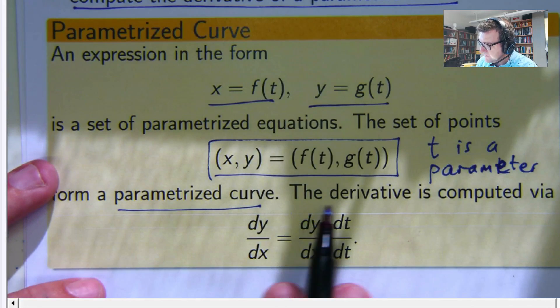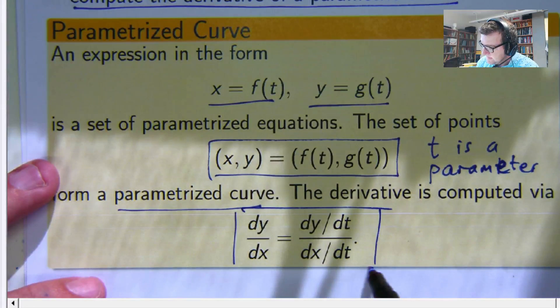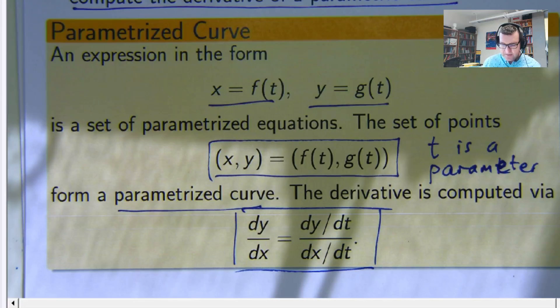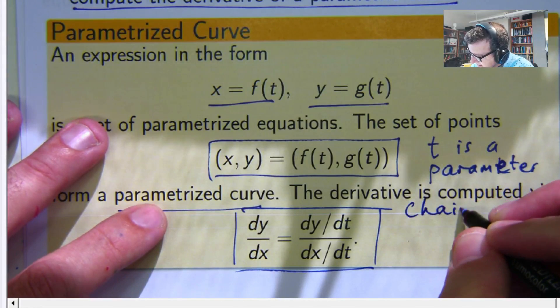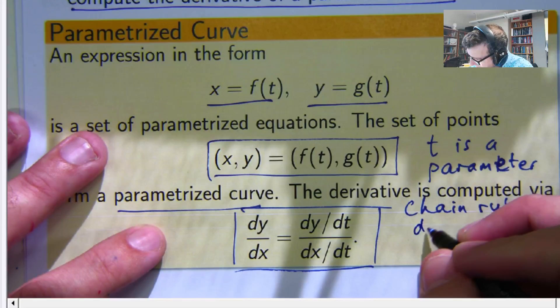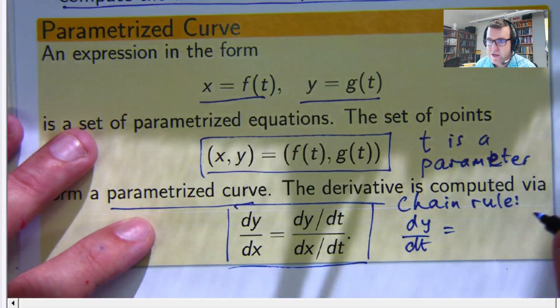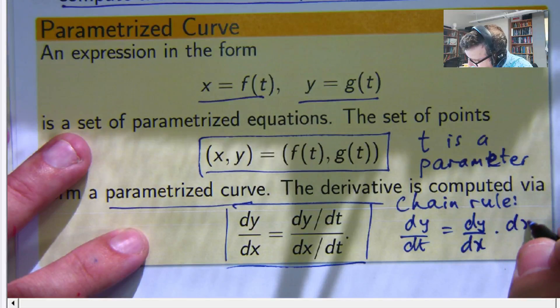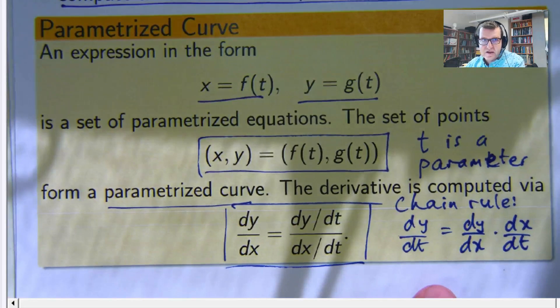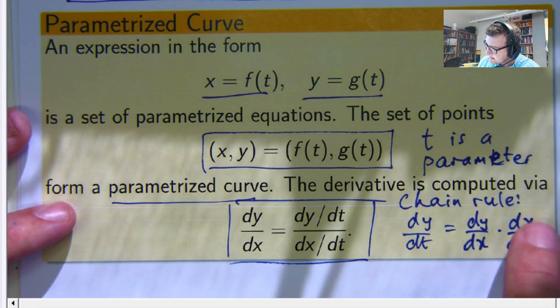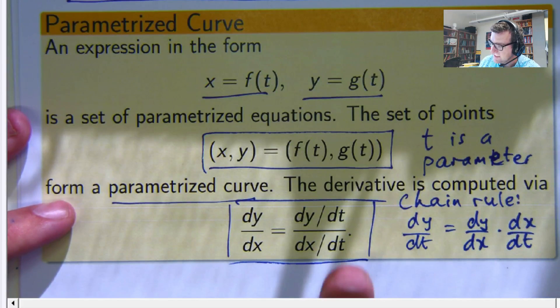And then we go on to say the derivative is computed via this division here. So you've kind of got dy/dx is dy/dt over dx/dt. So I'll give you an idea of where that comes from. It's just the chain rule. The chain rule basically says that I can write dy/dt as the product of two other derivatives. So you can write it as dy/dx times dx/dt. And thinking of these like fractions, you can cover up that, you get dy/dt. And then all you do to make dy/dx the subject is pull this and divide under here.